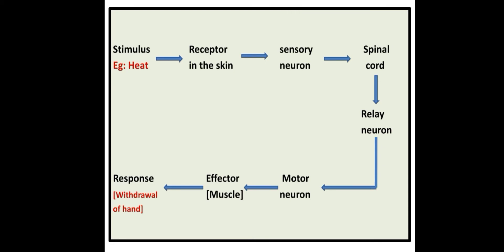In this case, muscles are the effector. As a result of this, the organ shows a response. In this case, withdrawal of the hand is the response shown by the effector organ. This simple flow chart shows the path of electrical impulses during a reflex action, also known as a reflex arc.